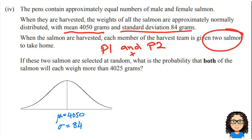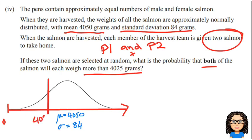Then the question below says if these two salmon are selected at random, what's the probability that both of the salmon will each weigh more than 4025 grams? Okay, so 4025. So I need to look at first of all my number line. Remember zero is way down the bottom there and the numbers are going up from left to right. So 4050, that's where my mean is, and we're talking about 4025, so that's some value below it. So I'm going to draw a line there below and put that number 4025.